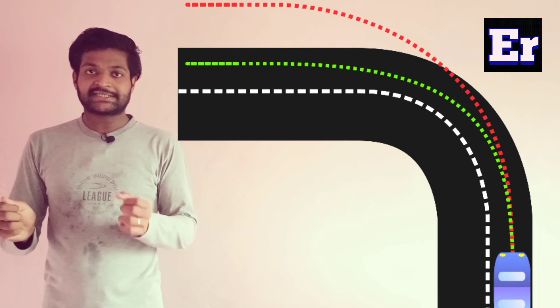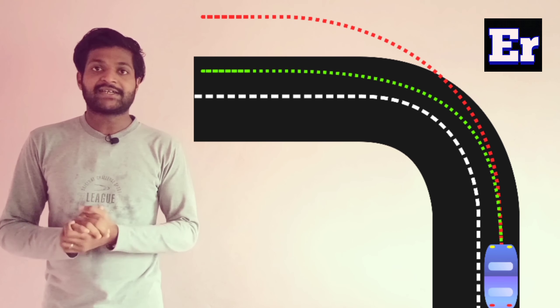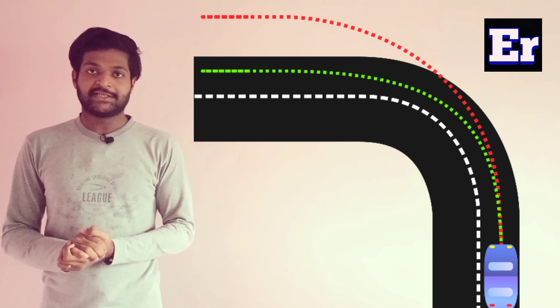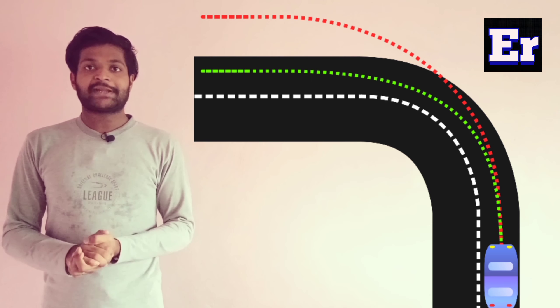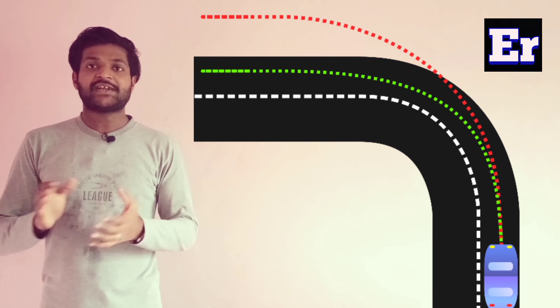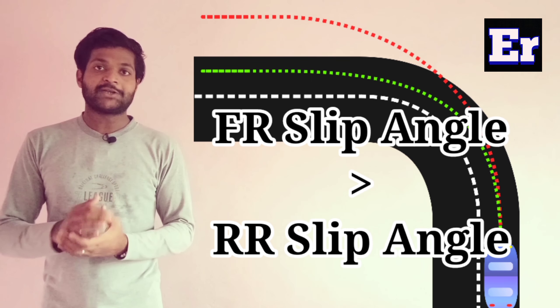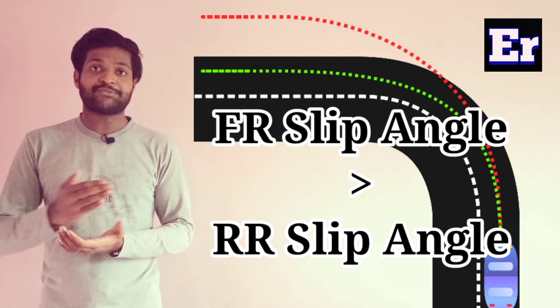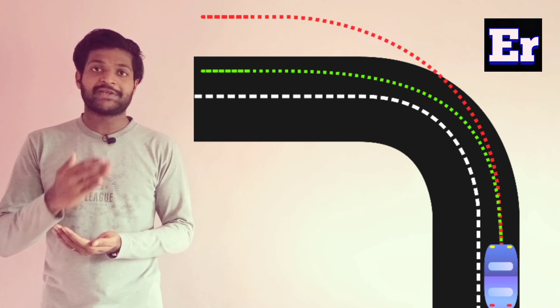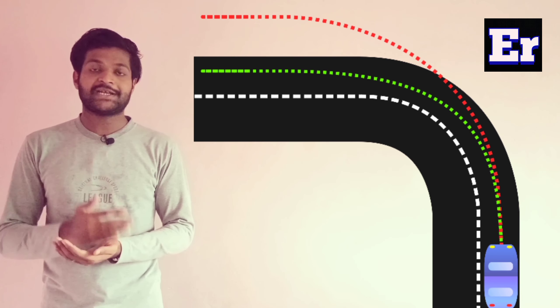Understeer is simply a mistake. You can see the direction of the steering wheel. Technically, you can see the front tire slip angle and rear slip angle. You can see the corner of the steering wheel.